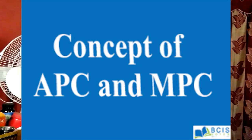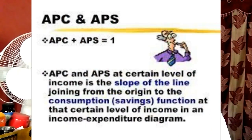What is the relationship between APC and APS? Since income is either consumed or saved, the sum of APC and APS is equal to 1. Thus, the higher the APC, the lower will be the APS, and vice versa.